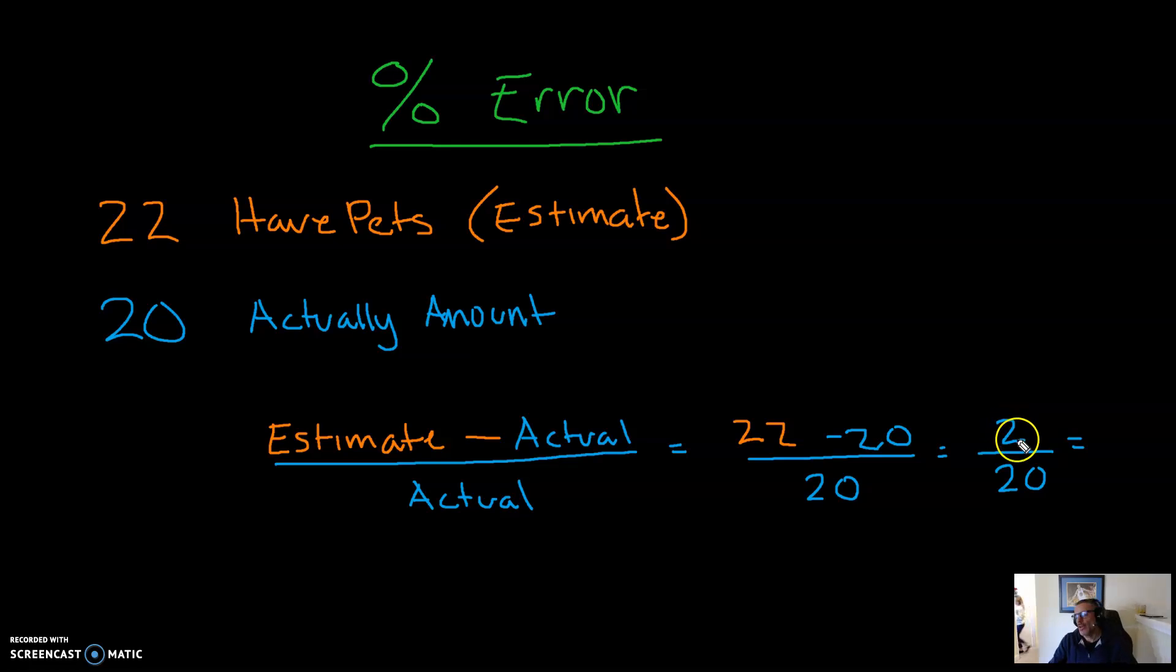So two divided by 20. And again, remember a fraction is a division problem. You can think of this as a couple of ways. You could just do two divided by 20 in a calculator. You could simplify this to one 10th. Either way, we're going to get this in a decimal form of 0.1.